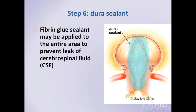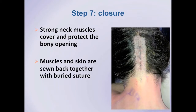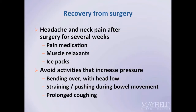Some surgeons also like to augment their repair with a glue-like substance called fibrin glue, a form of biological sealant that prevents leaks from occurring. The final step of the surgery is to close the wound, usually with sutures buried underneath the skin that do not require removal. A super glue-like product is applied to the skin as an external dressing, and hair can usually be washed the day after surgery.